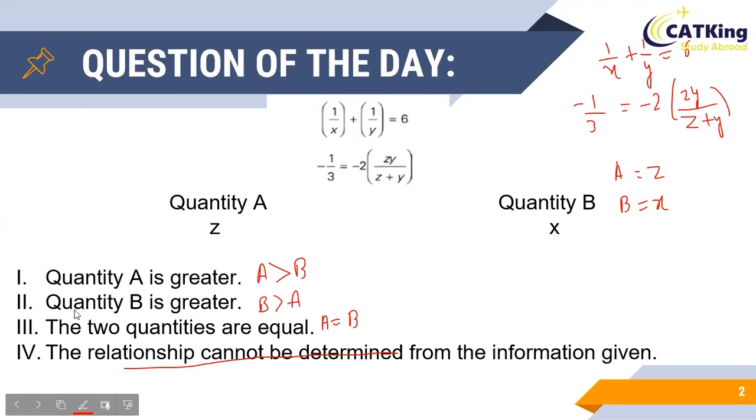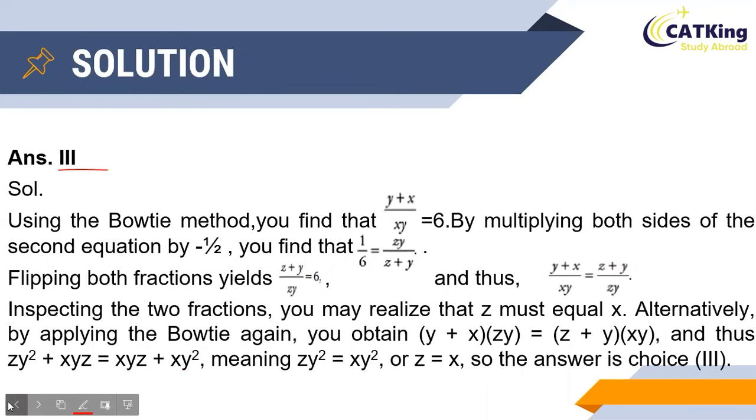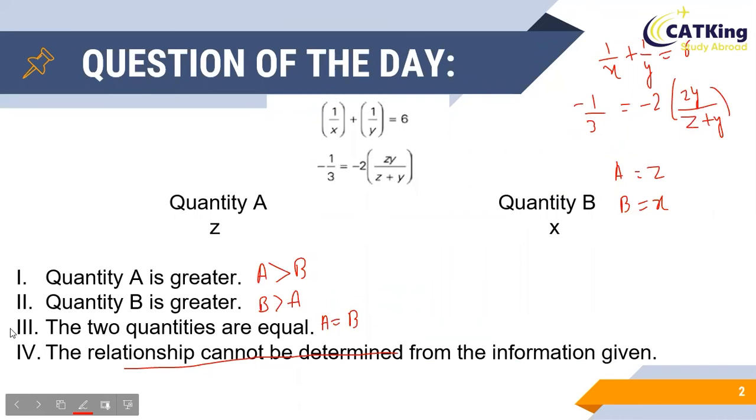Before we move on to the detailed solution, let us take a quick glance at the correct answer. As you can see, the correct answer is option 3—the two quantities are equal. Now let us see how we arrived at this particular answer.